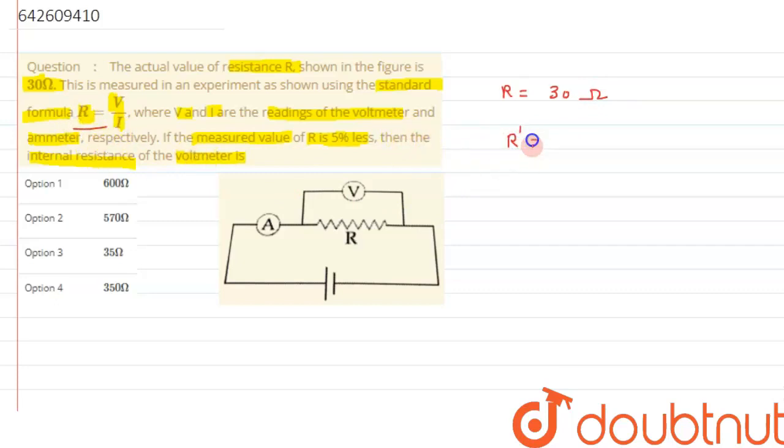So let's suppose that value has to be R prime, so it is coming out to be 5% less, that is R minus R into 5% will be 0.05, or we can write it as 0.95R. So that comes out to be approximately the value comes out to be 28.5 ohms. This is what the value of R prime we are getting, that is after it gets 5% reduced.